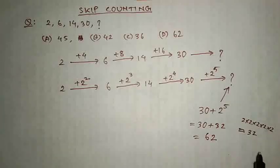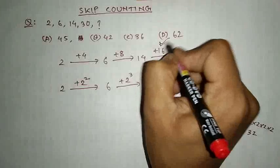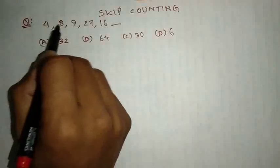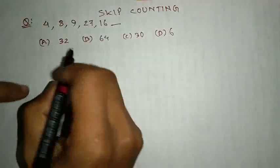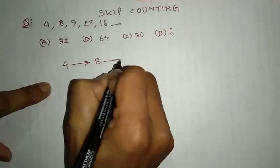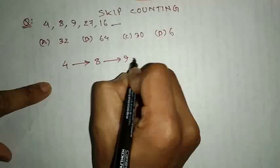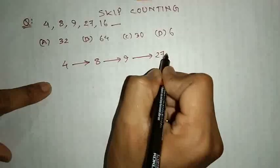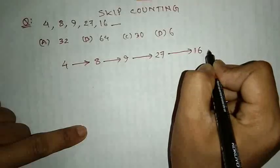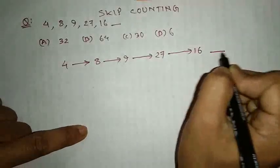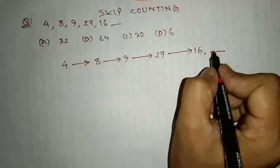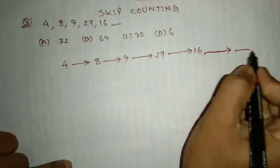So, we have a number of D number options. Next is 4, 8, 9, 27, 16. We have 4, 4, 8, 8, 9, 27. So, 27 years old, on 27 years old, and 17 years old — this is the last year. So, when the last year, the last year is the last year.